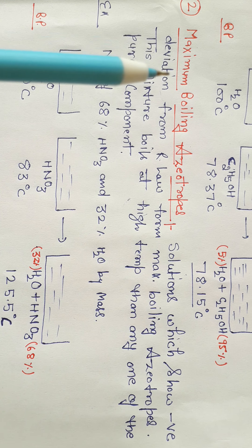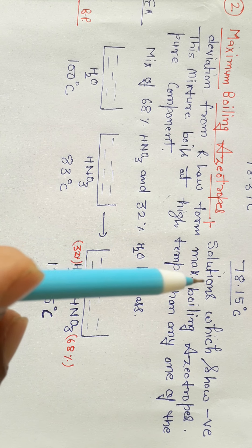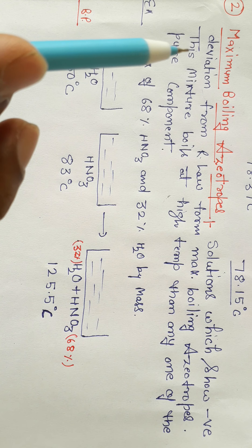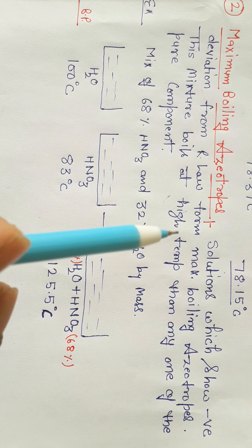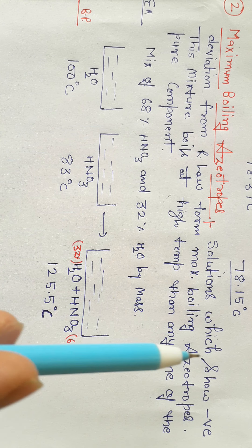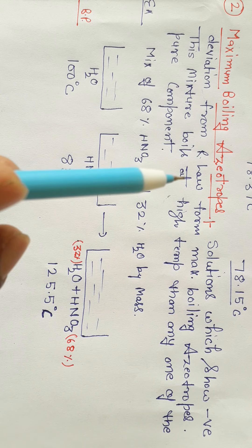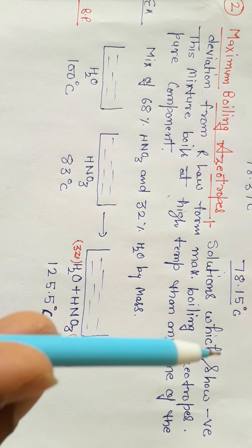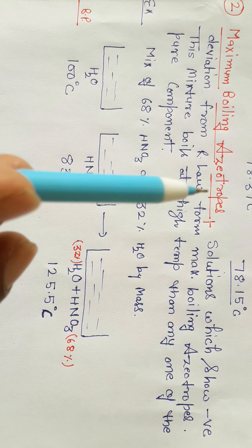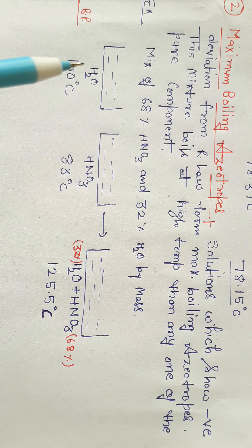Next are maximum boiling azeotropes. Solutions which show negative deviation from Raoult's law form maximum boiling azeotropes. This mixture boils at a higher temperature than any one of the pure components, and the boiling point of this mixture is very high compared to any single component's boiling point.